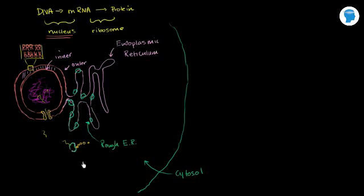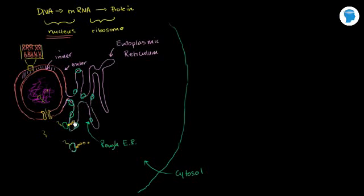The rough ER — perhaps an even better name for a band — is where ribosomes are attached to the membrane. There is also the smooth endoplasmic reticulum. The role of the rough ER in protein synthesis is that messenger RNA can find one of these ribosomes associated with it, and as the protein is translated, it won't be released into the cytosol but into the lumen of the rough endoplasmic reticulum.